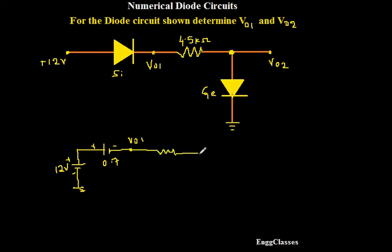and after that there is a germanium diode. I will replace germanium diode with its cutting voltage of 0.3 volt. So this is connected to ground. This is positive, this is negative 0.3 volt and here I have V02. This is 4.5 kilo ohm. This will be positive, this will be negative.